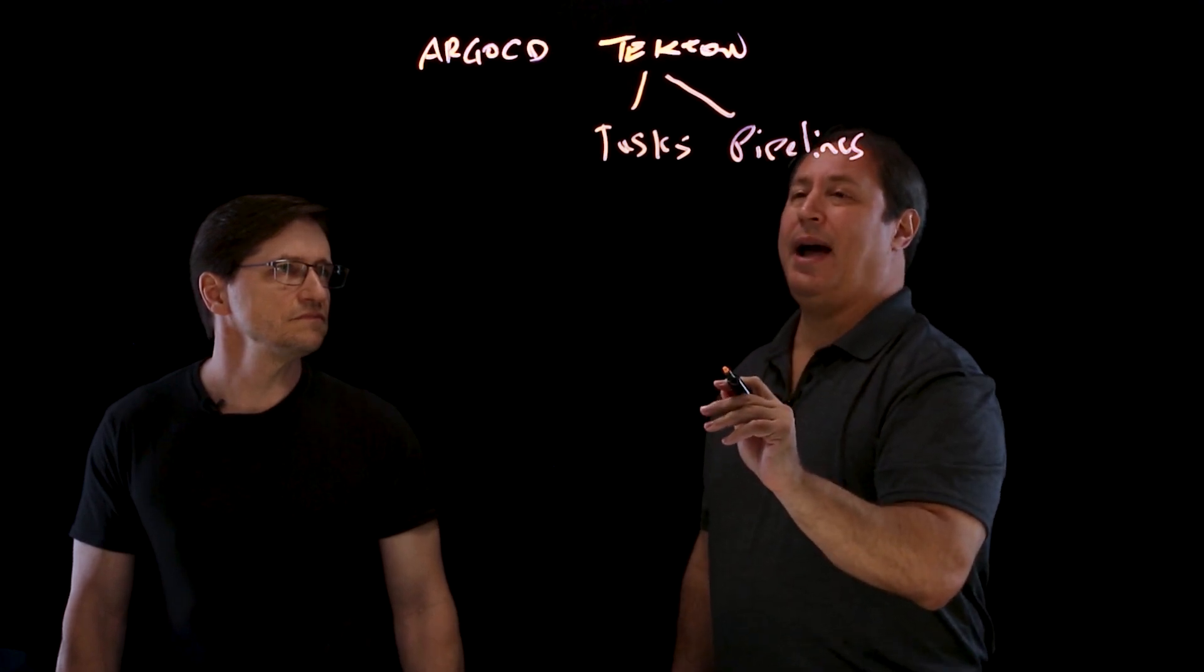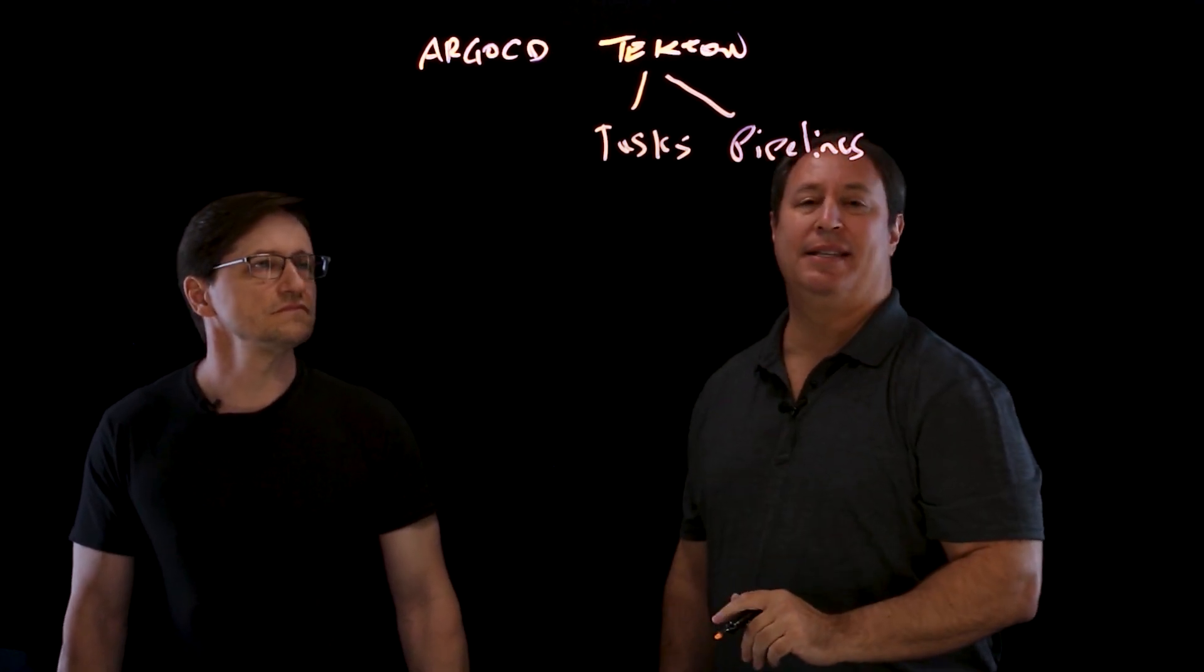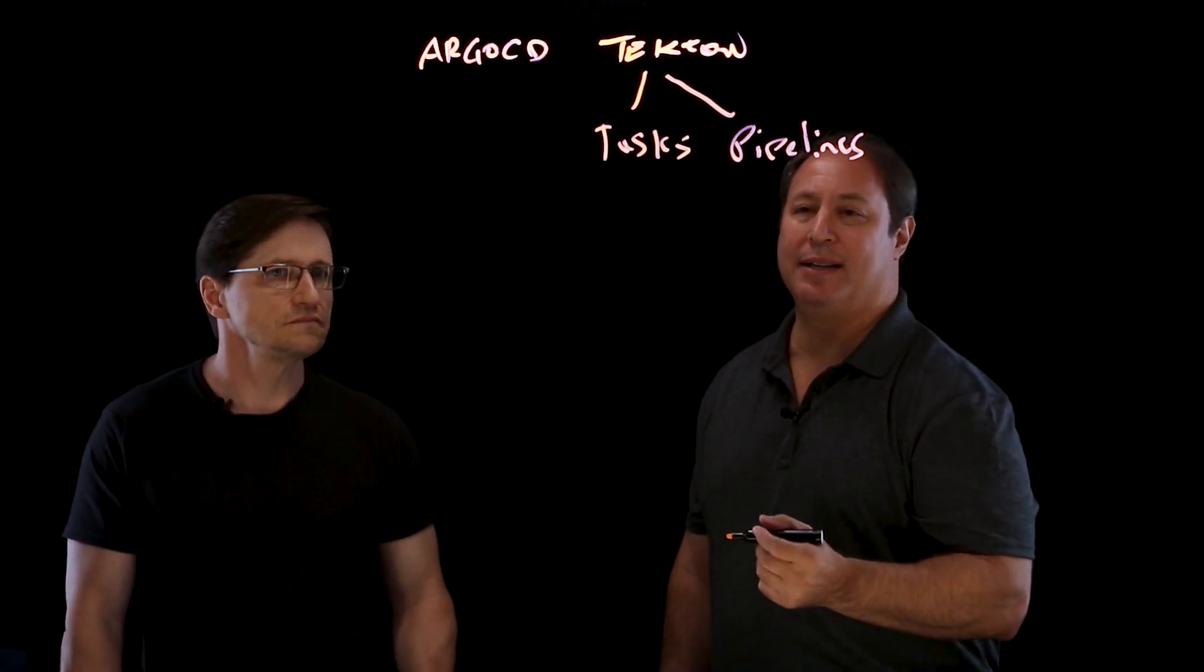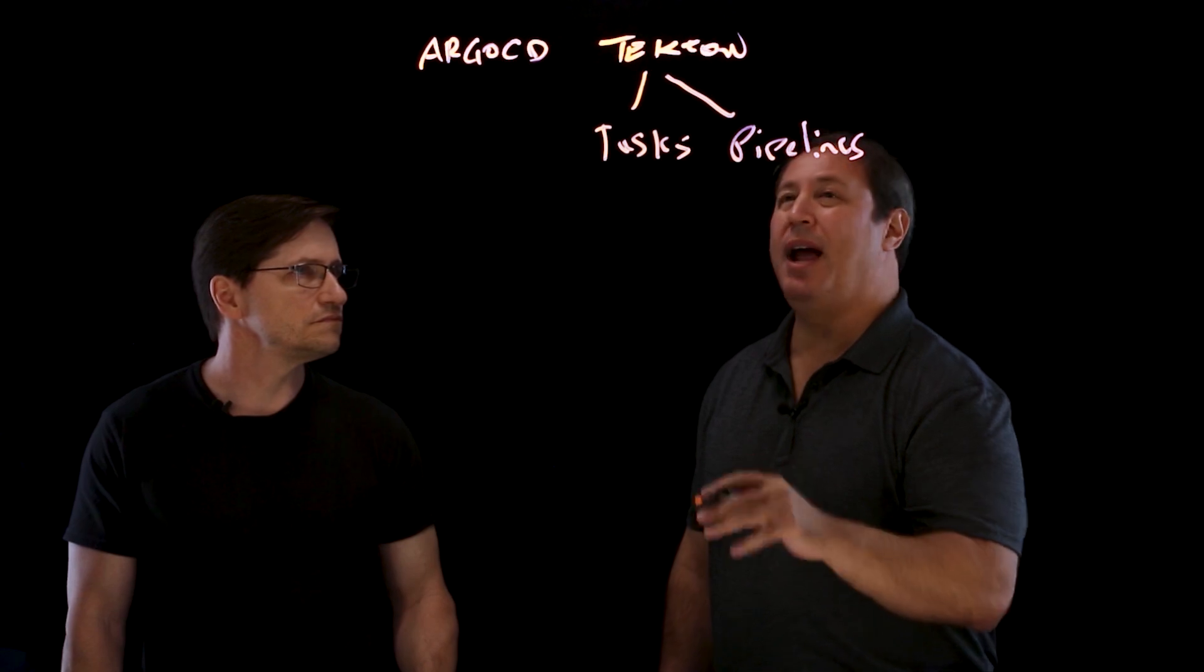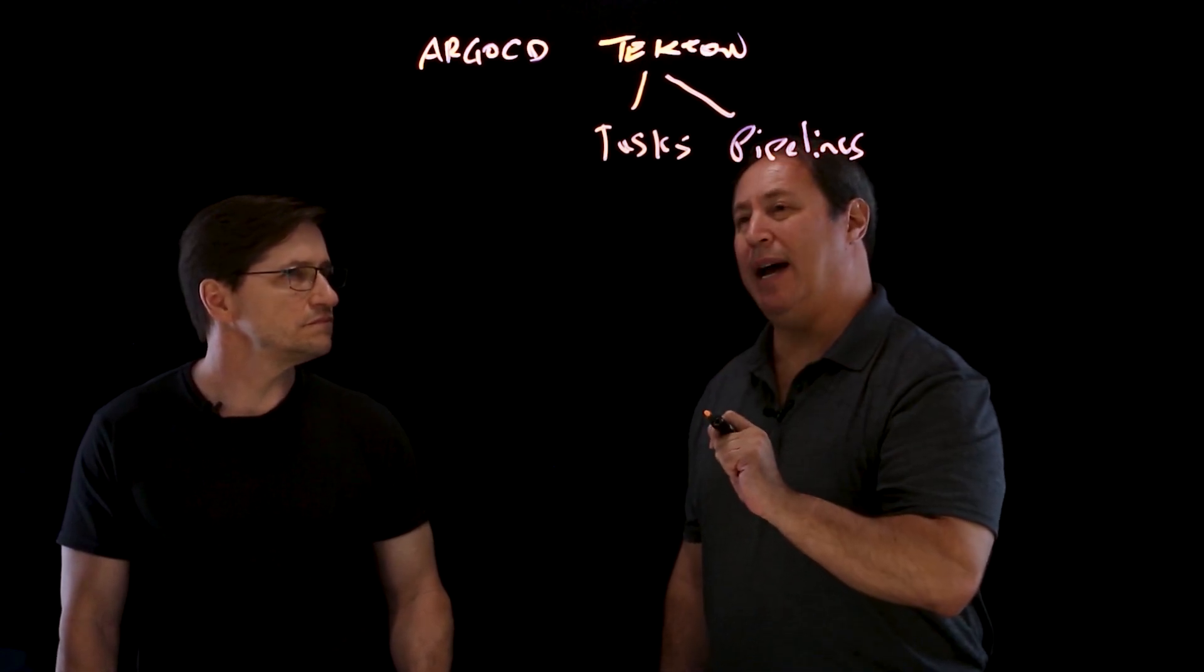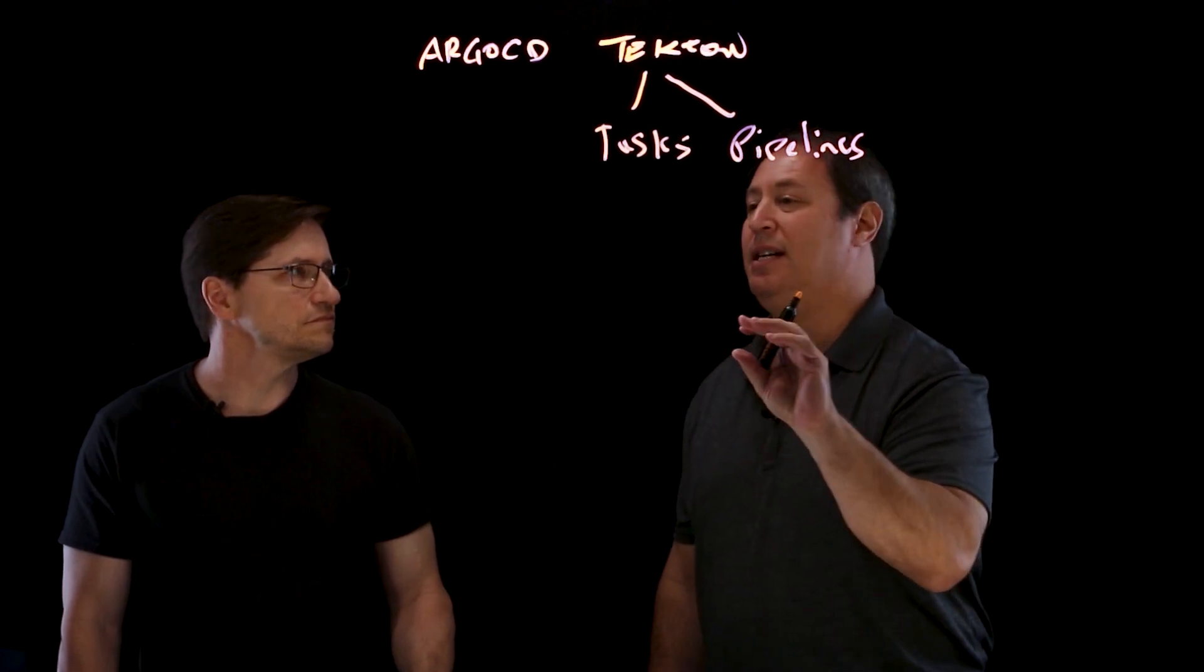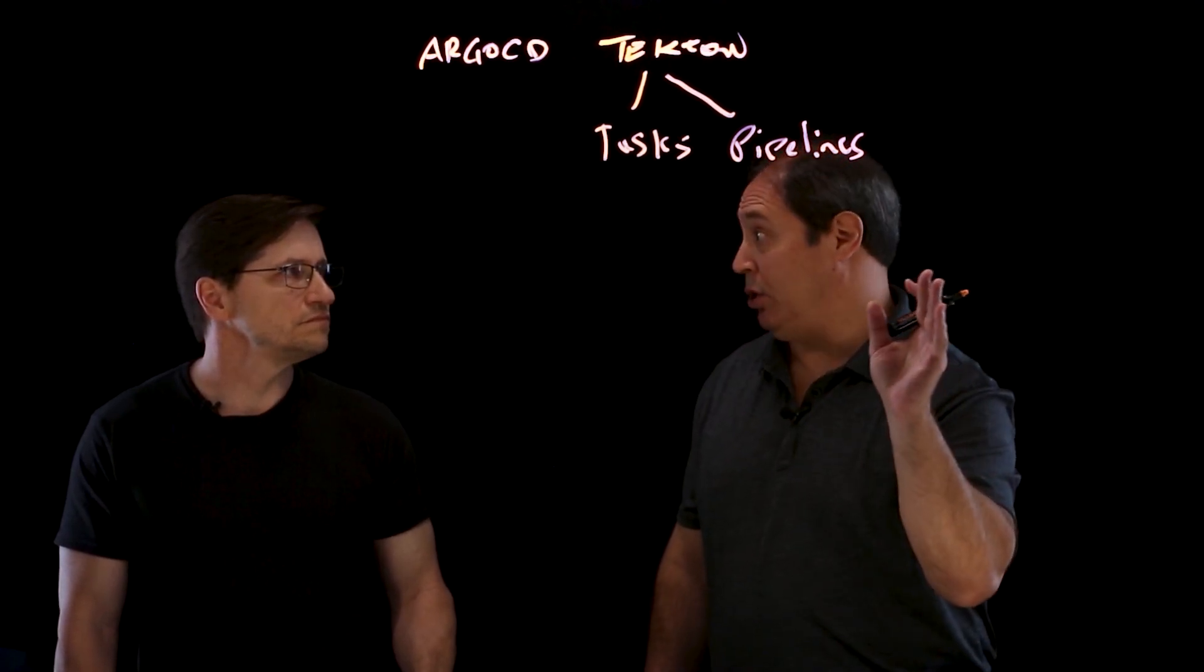And so what happens is we have these reusable tasks and these are steps like clone a repository, run unit tests, build and deploy an image. And Tekton allows you to take those reusable tasks and compose them into pipelines and those pipelines do all the stages of CI/CD and can even deploy to production.